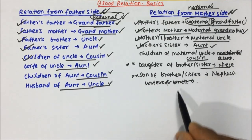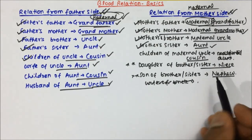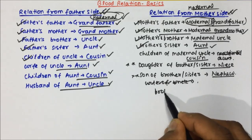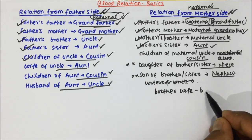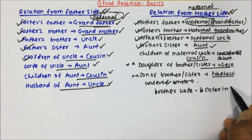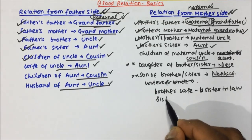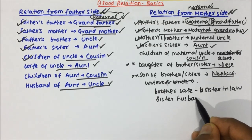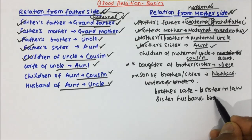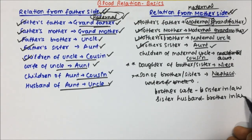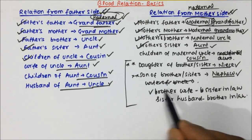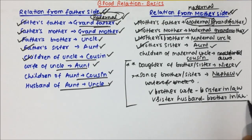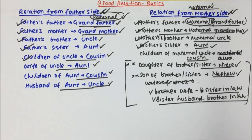Children of maternal uncle will be cousin. Now, these two are very important: daughter of brother or sister will be niece, and son of brother or sister will be nephew. Brother's wife will be sister-in-law, and sister's husband will be brother-in-law. These are the most commonly used terms in blood relation questions.